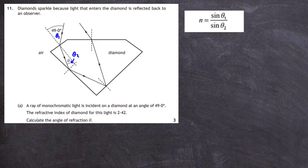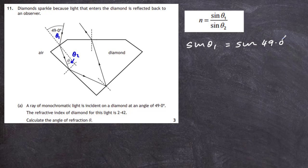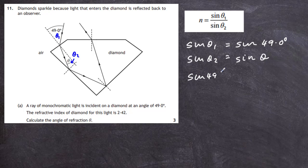Remember, all angles are measured from the normal. So back to our calculation: sin θ₁ is the sine of the angle between the normal and the incoming ray from air, which equals sin 49.0 degrees. And sin θ₂ is the angle between the normal and the refracted ray inside the diamond — that is sin θ. So we have sin 49° divided by sin θ equal to the refractive index 2.42.